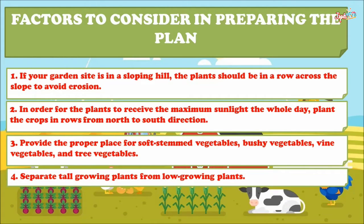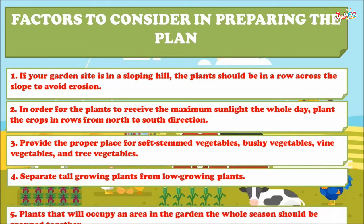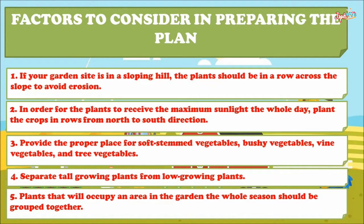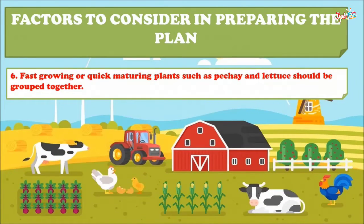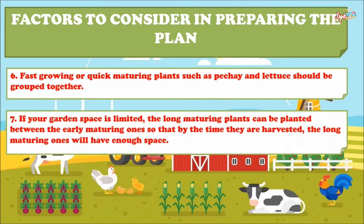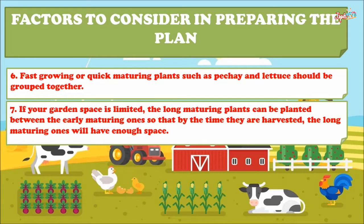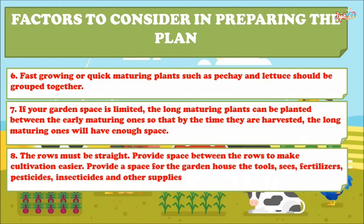Separate tall growing plants from low growing plants. Plants that will occupy an area in the garden the whole season should be grouped together. Fast growing or quick maturing plants such as pechay and lettuce should be grouped together. If your garden space is limited, long maturing plants can be planted between the early maturing ones, so that by the time they are harvested, the long maturing ones will have enough space.